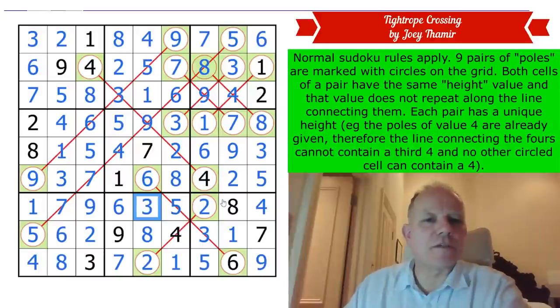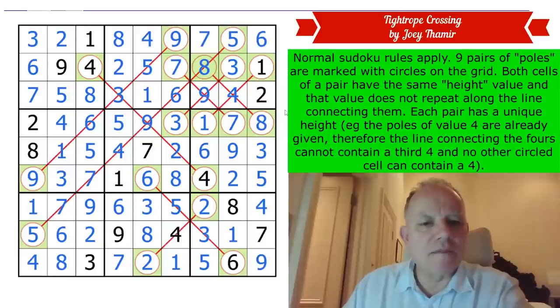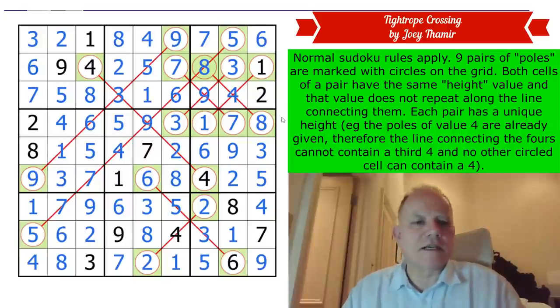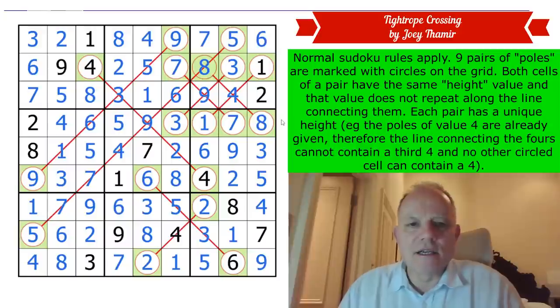This hasn't been too hard at all. I hope you had a go at this one. It really is an interesting rule set, but there was a lot of given digits to be honest, and that really did make it genuinely approachable. Thank you, Joey. I do hope everybody had a try at that. That was really interesting. Tightrope Crossing. I have not seen one like that before, but I enjoyed it.